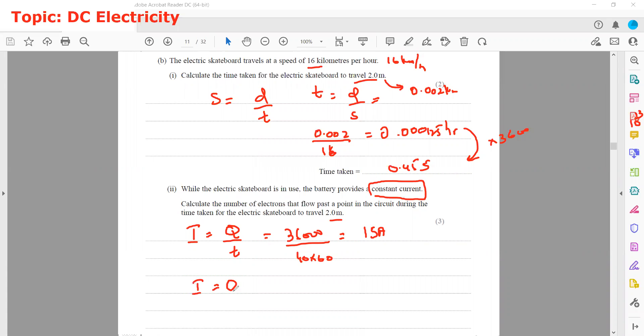Again, we use the same formula I = Q/T to find how much charge will flow if the current is 15 amperes in 0.45 seconds. So charge equals current multiplied by time. Current is 15 and time is 0.45. This gives us the charge that will flow: 6.75 coulombs.